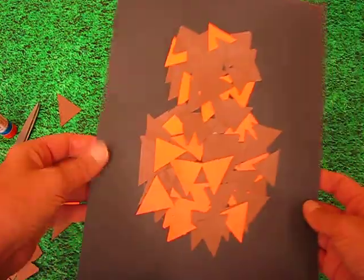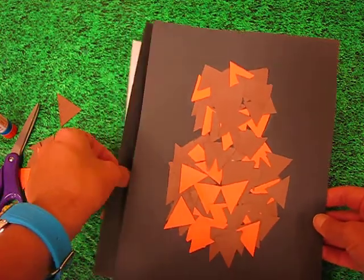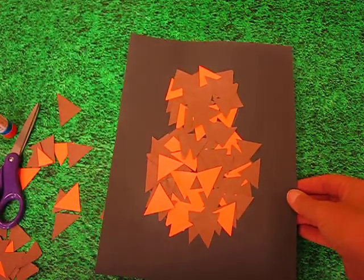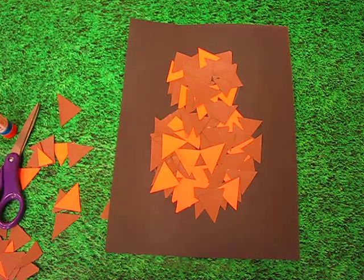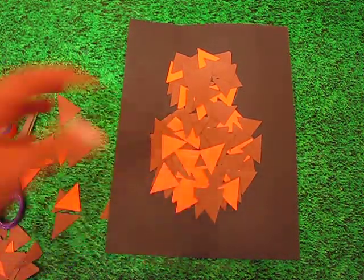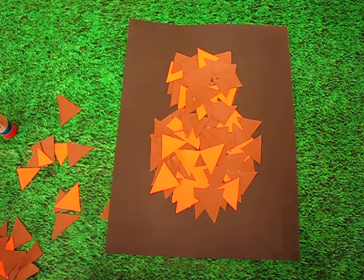You're going to continue that until you get to this stage till the whole thing is filled. Now it's missing a few things. It needs a beak, it needs eyes, it needs feet or claws and it needs a branch to be sitting on.